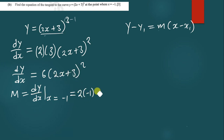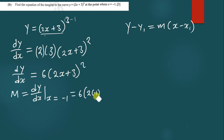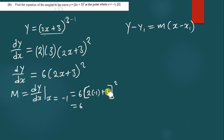We have 6 times (2 times negative 1 plus 3) to the power 2. Simplifying inside: negative 2 plus 3 gives 1, and 1 squared is 1. So 6 times 1 equals 6. The gradient is therefore equal to 6.